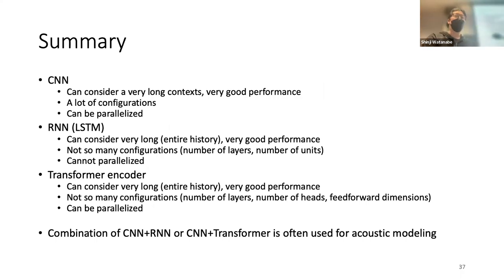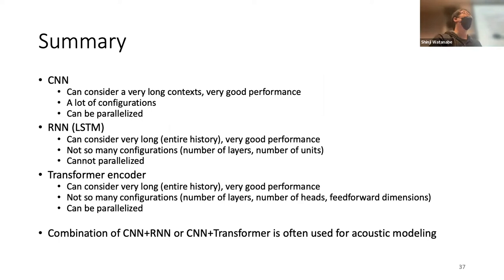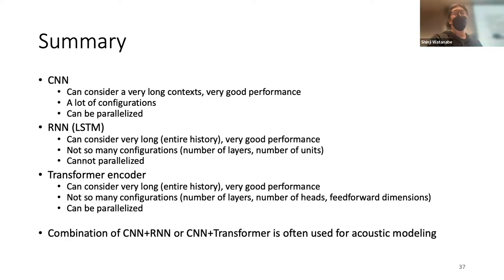This is the summary of advanced acoustic models. People initially started with feed-forward, then moved to CNN, then RNN/LSTM, and then transformer encoder. Each method has pros and cons. People moved from feed-forward to LSTM for long-range context, then to transformer encoder because it considers the entire history like LSTM but can also parallelize training like CNN or feed-forward. There is a memory issue, but downsampling can mitigate it, so CNN and transformer encoder combination is often used in current state-of-the-art acoustic models.